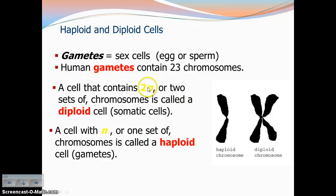We call a cell that has two sets of chromosomes diploid — 'di' meaning two. They have a set from mom and a set from dad, so all of your somatic cells are diploid cells. A cell that only has one set of chromosomes is called a haploid cell. These would be your gametes, your sex cells — they have half the number of chromosomes. Think diploid: two sets, that's somatic cells. Haploid: think half. Those are going to be your sex cells.